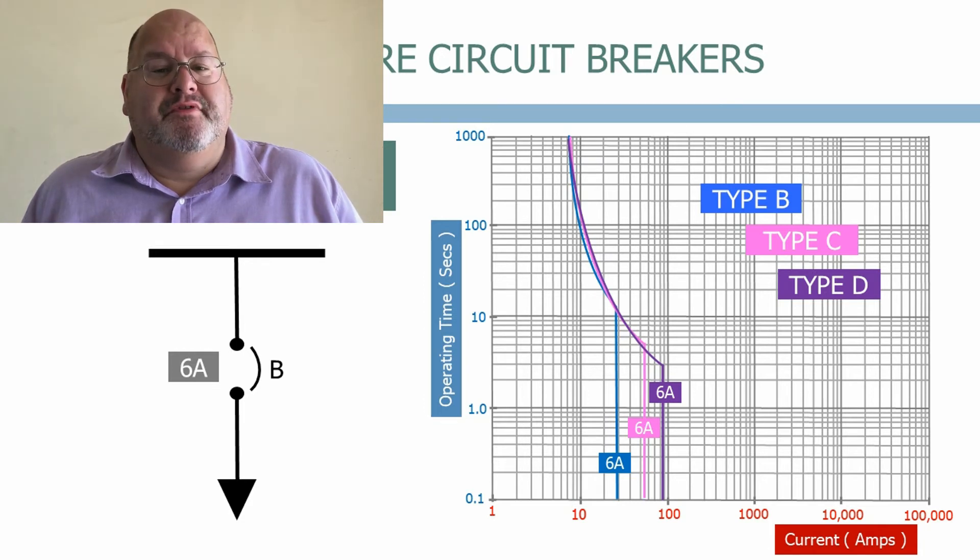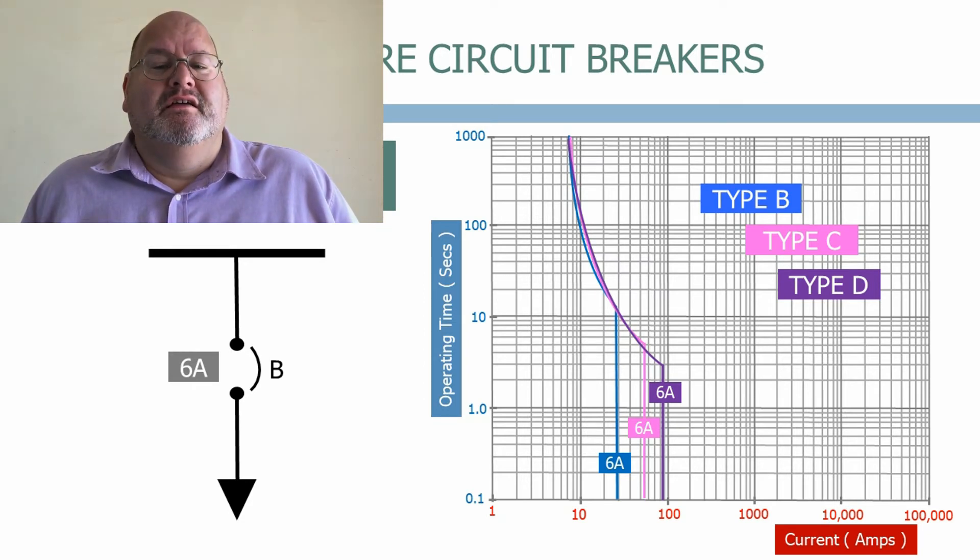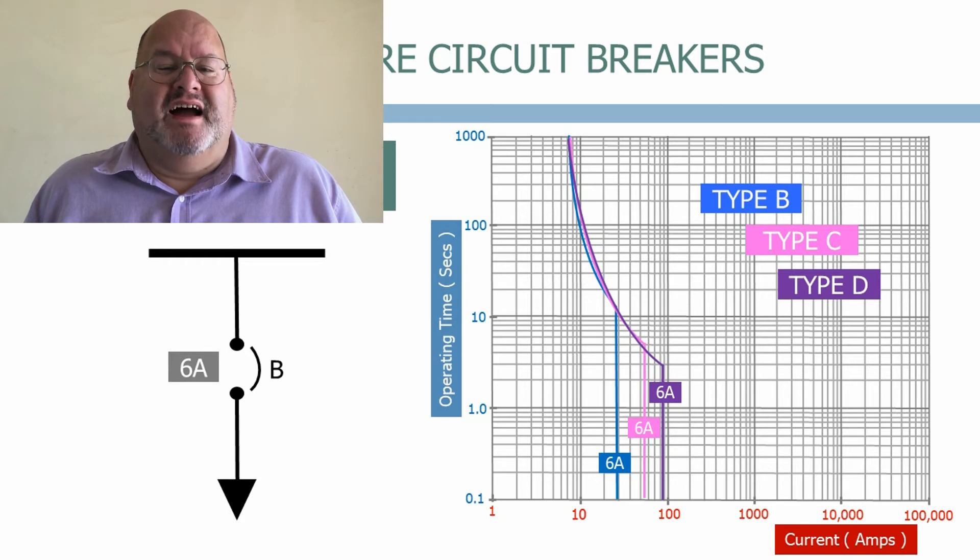When miniature circuit breakers were first introduced the majority of the low voltage circuits were protected by fuses. The MCB designers therefore made sure that the MCB time current characteristic would successfully coordinate with those of the fuses lower down the network.